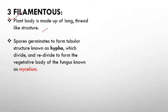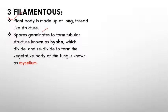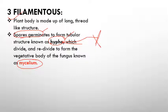The next form is the filamentous form. The thallus consists of thread-like structures. By the germination of spores, they form tubular or thread-like structures known as hyphae. Hypha is the basic unit of the fungal thallus, which divides and re-divides to give rise to the vegetative body of the fungus — the mycelium. A single thread is called a hypha; when multiple hyphae intermingle and give rise to a vegetative mass, that structure is known as mycelium.